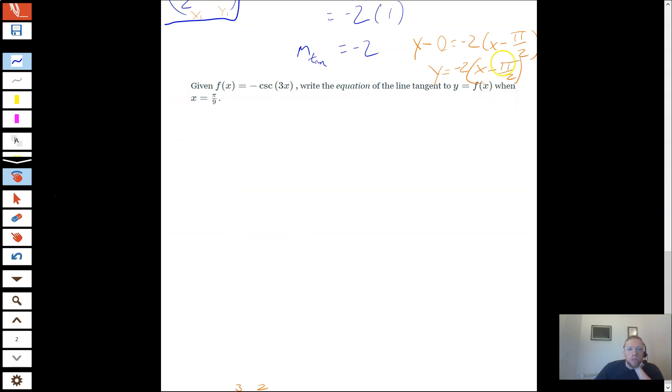So make sure you understand this one before we move on. And here we go. So same thing as before. We want the equation of a tangent line at x equals π/9.